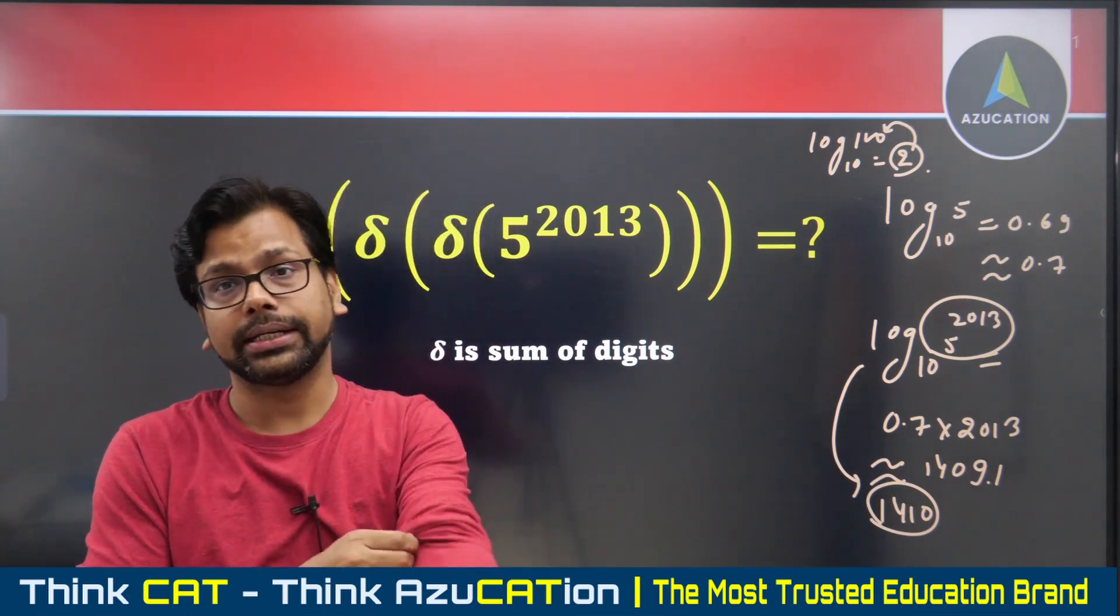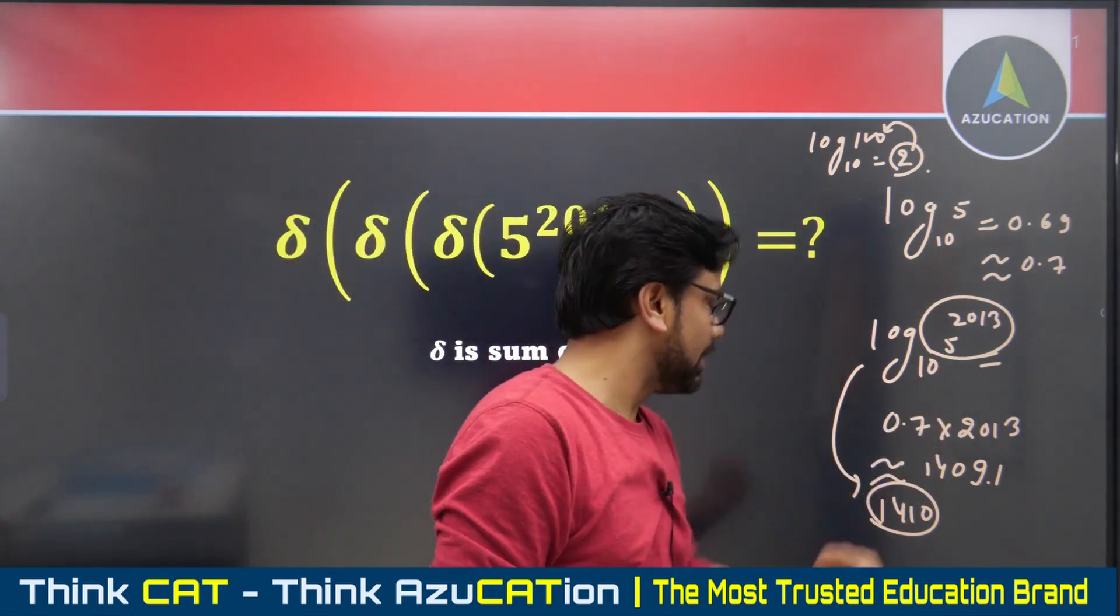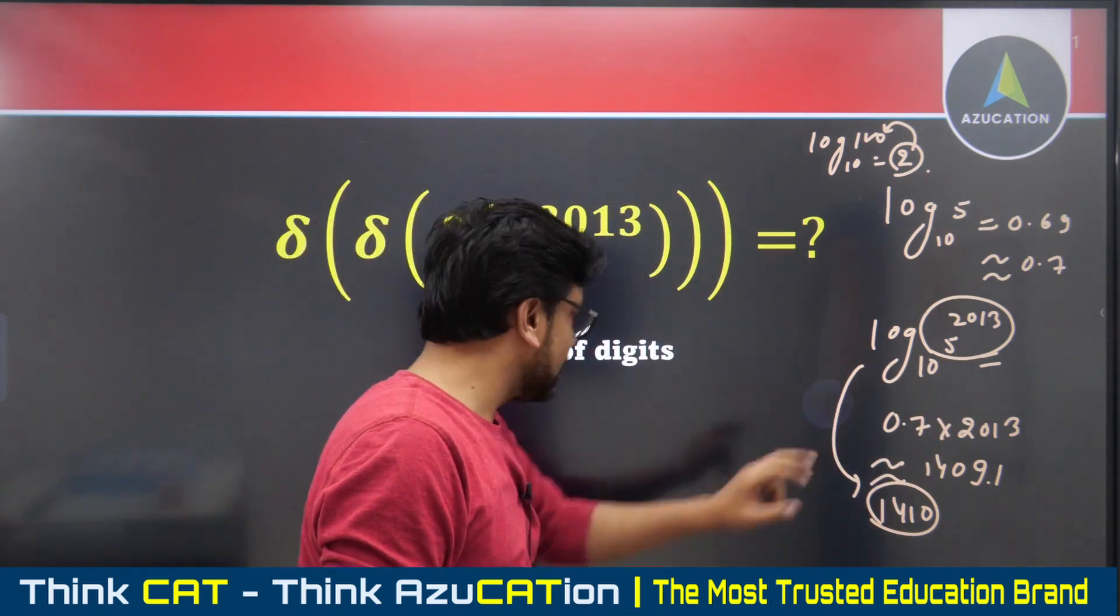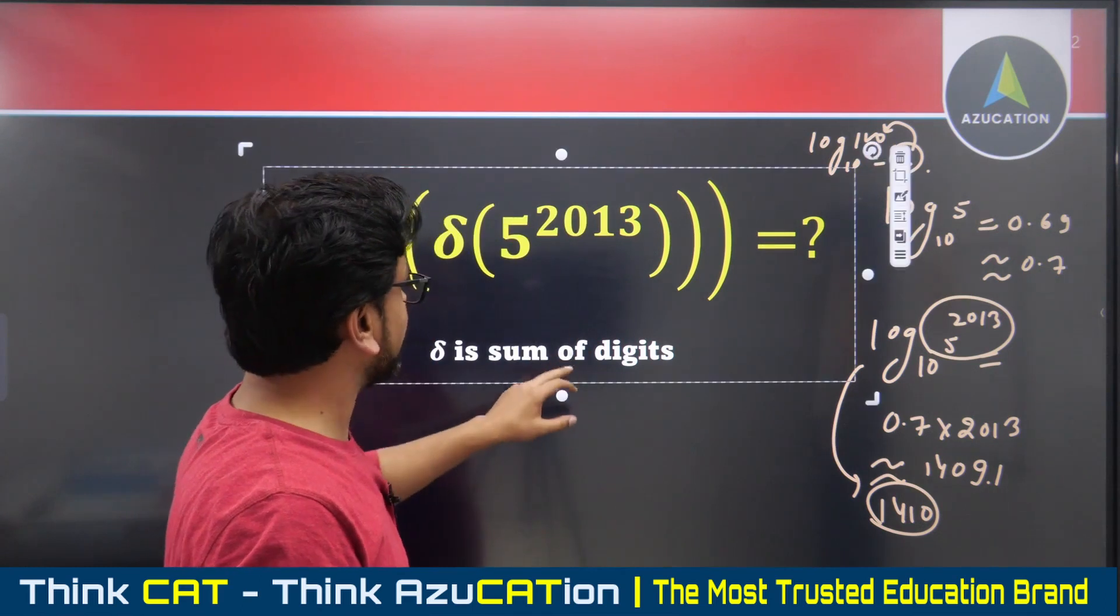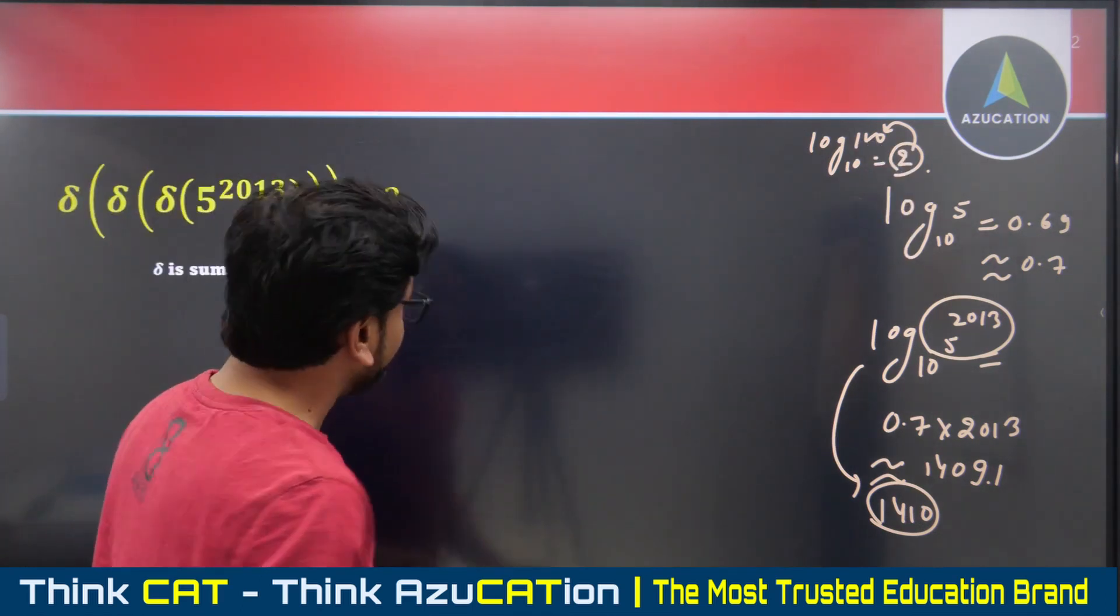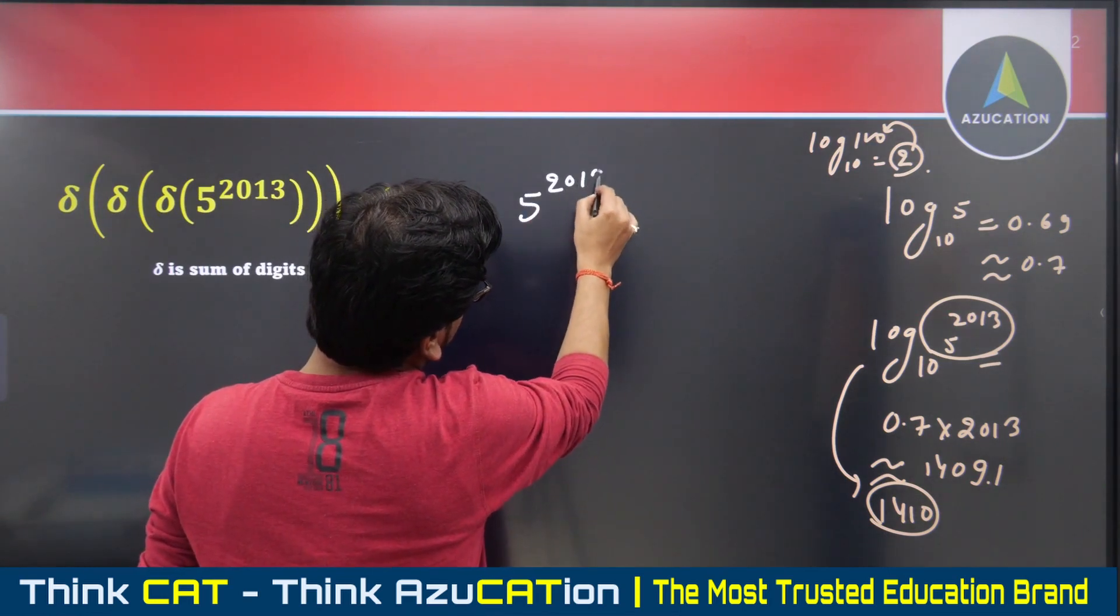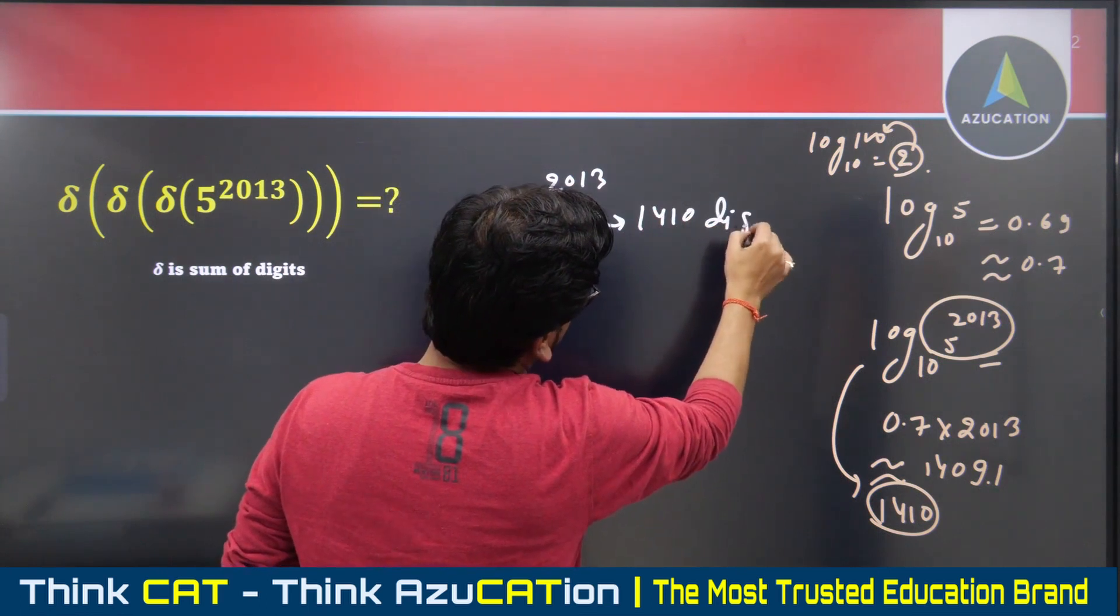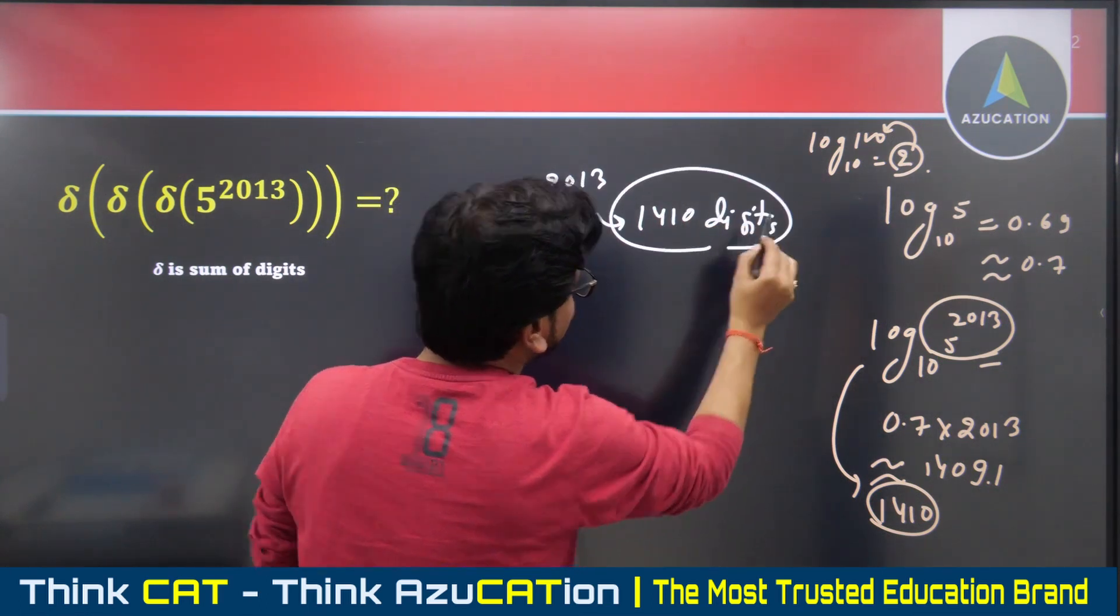I hope it's clear what we mean by digit numbers, because I've found the number of digits. Now I want to show you why this process leads to what it does. So this was my question. We've established that 5^2013 is approximately a 1410-digit number. This is a very large number.